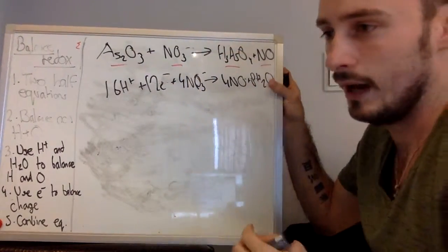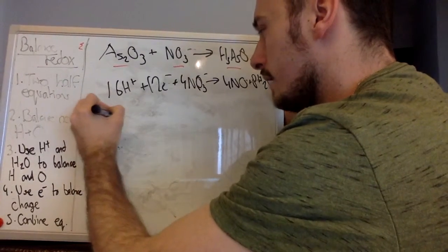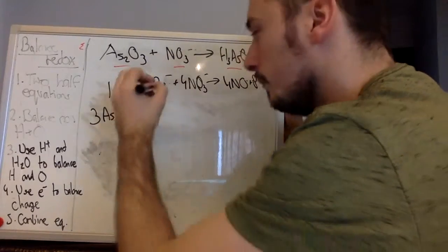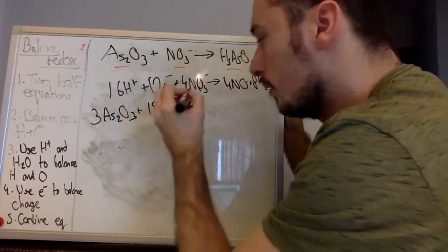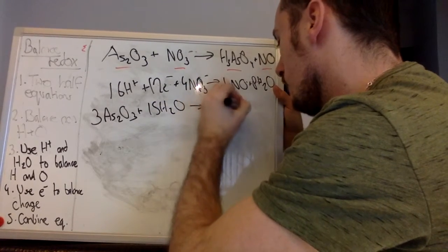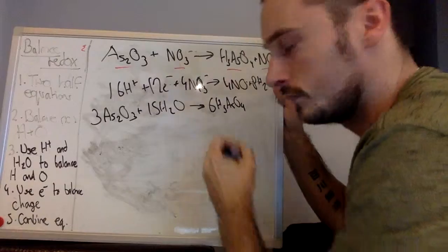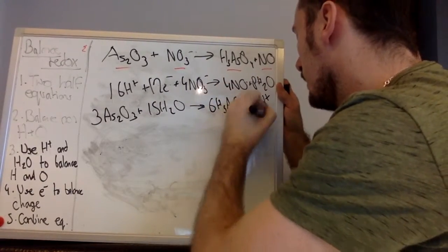16H plus plus 12E minus plus 4NO3 minus going to 4NO and 8H2O. Then our other equation being fully balanced is 6H3As2O3 plus 15H2O going to 6H3AsO4, 12H plus and 12E minus.